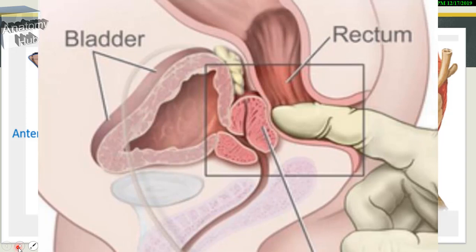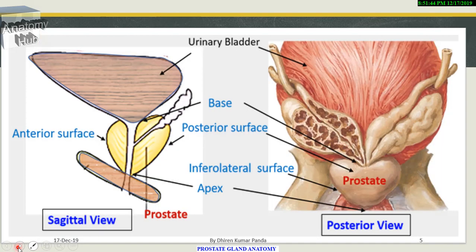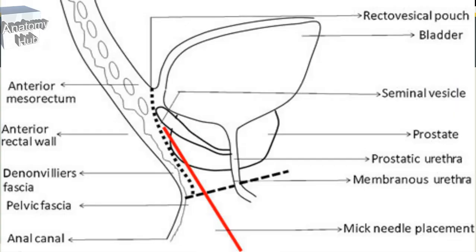The posterior surface is separated from the rectum by the sheath of the prostate, which is formed by the rectovesical fascia. The rectovesical pouch, in prenatal life, extends up to the perineal body. Later on, the two layers of peritoneum of the lower part of the rectovesical pouch fuse and form the rectovesical fascia, which extends superiorly up to the seminal vesicle and inferiorly up to the perineal body.